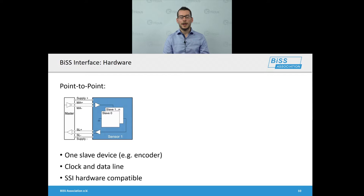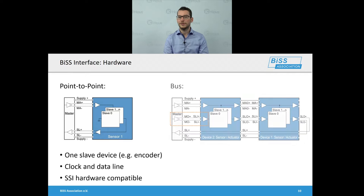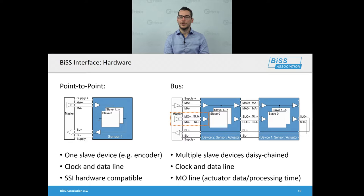Now I'd like to go into more detail about the BiSS interface. The typical hardware setup is a point-to-point configuration with one BiSS master and one BiSS slave device. The BiSS master sends its clock signal to the slave and the slave responds with its data signal to the master. This setup is hardware compatible with the SSI interface and typically uses the RS422 standard. This also enables a bus configuration where multiple slaves are connected in a daisy chain to the BiSS master. There is an additional MO line used by the master to configure processing time or transmit actuator data to the slaves.